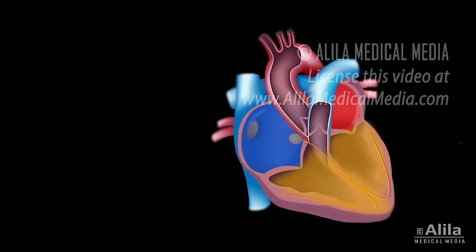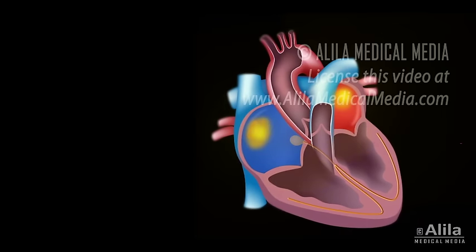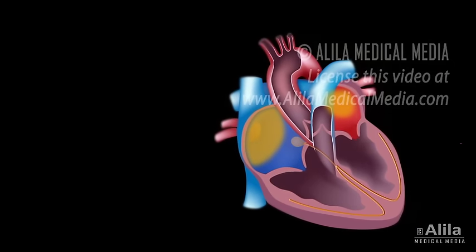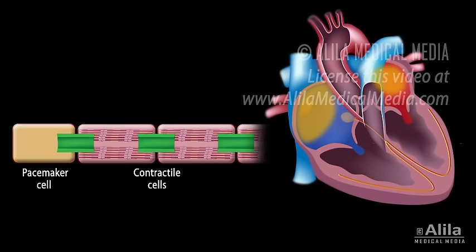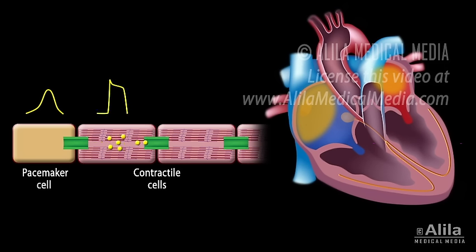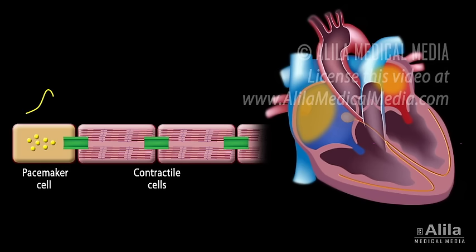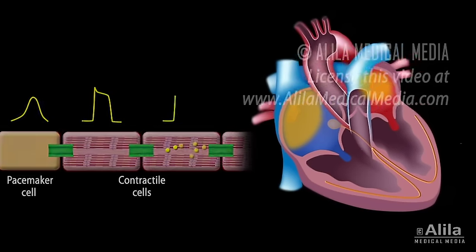The cells of the SA node fire spontaneously, generating action potentials that spread through the contractile myocytes of the atria. The myocytes are connected by gap junctions, which form channels that allow ions to flow from one cell to another. This enables electrical coupling of neighboring cells. An action potential in one cell triggers another action potential in its neighbor and the signals propagate rapidly.